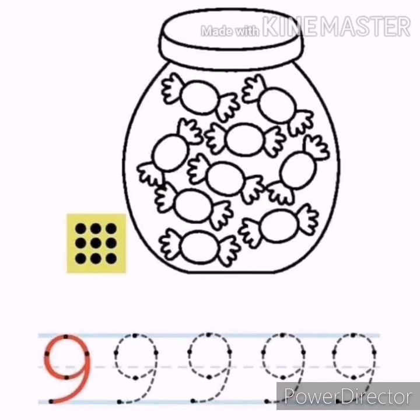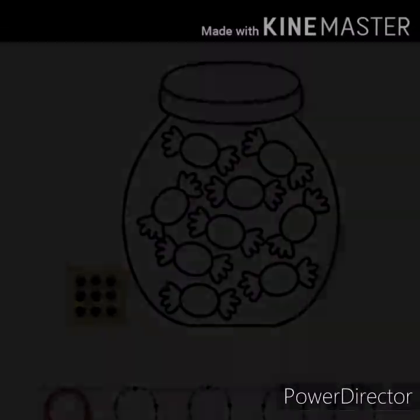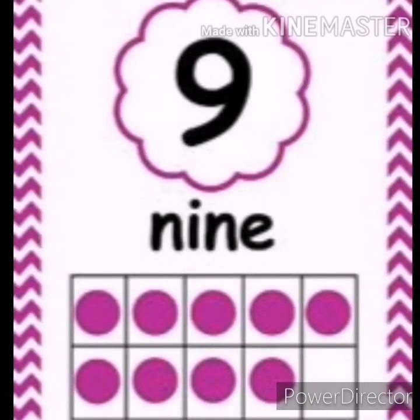How many sweets? Let's count: one, two, three, four, five, six, seven, eight, nine. There are nine sweets. What's this number? Number nine. How many dots are there in the 10 frames? Let's count: one, two, three, four, five, six, seven, eight, nine. There are nine dots. How many more would you need to get to 10? Let's count the empty frames: one. I need one.